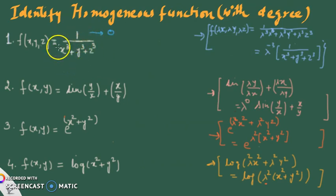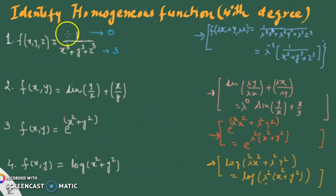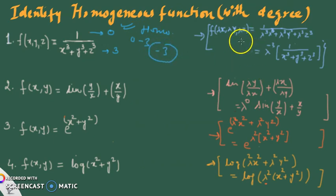The denominator has three terms, and I have to check whether they maintain the same degree. Here the three terms x³, y³, z³ are all maintaining degree three, so it is homogeneous of degree three. Viewing numerator and denominator separately, the degree of the overall function is zero minus three, which equals minus three. So yes, it is a homogeneous function of degree minus three. By substituting λx, λy, λz, we get λ⁻³ and the function comes back.